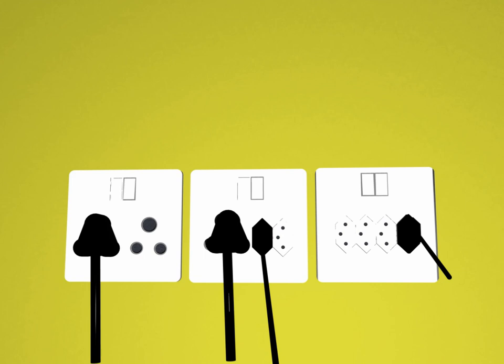IEC 60906-1 is an international standard designed to provide a safe, compact and practical 16A 250V AC system of plugs and socket outlets that could be accepted by many countries as their national standard, even if not in the near future.